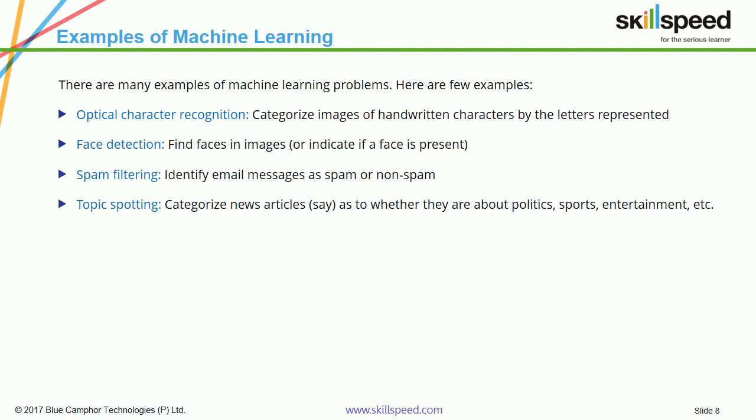The next example is topic spotting. If you have used Google News, it uses topic spotting. Google News displays news from major portals such as the New York Times, BBC, or TechCrunch. When the system receives news, it has to identify whether it belongs to the finance, entertainment, or technology category. This is done using machine learning — specifically a technique called clustering, which groups similar news items into one group.